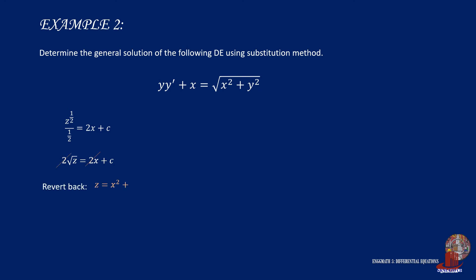Then we place the values of z into the equation to have root of x squared plus y squared is equal to x plus c. Remove the radical sign by squaring both ends of the equation, so x squared plus y squared is equal to the quantity of x plus c squared. Let's expand the right term to x squared plus 2cx plus c squared. Then cancel x squared from both ends to have y squared is equal to c times x plus 1.